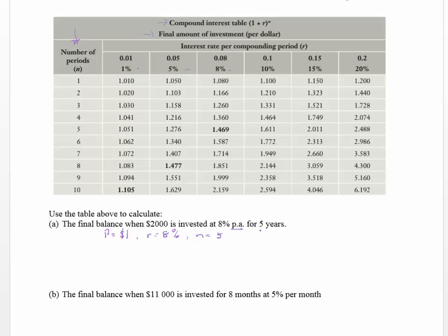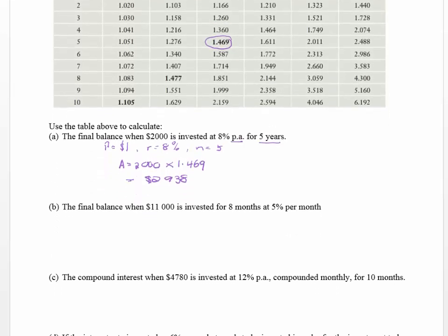Since the rate and time are both in years, no conversion is needed. From the table, eight percent for five years gives 1.469 — that's what one dollar is worth. But we're investing two thousand dollars, so we calculate 2,000 × 1.469, which gives us a final balance of two thousand nine hundred and thirty-eight dollars.